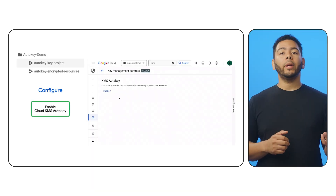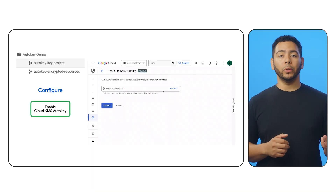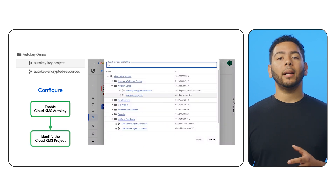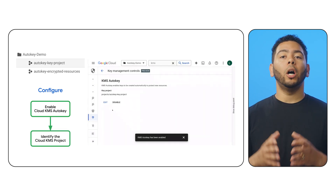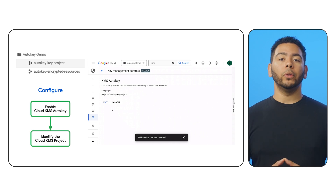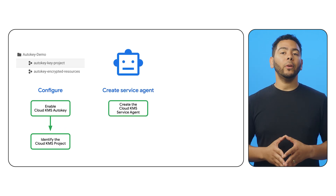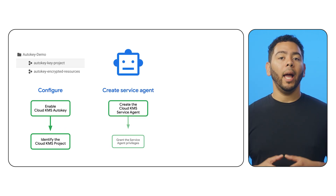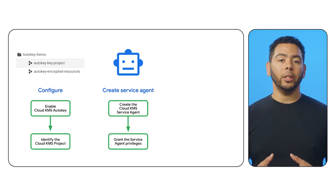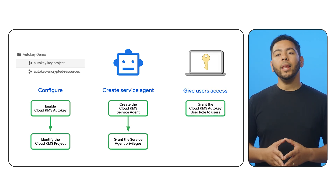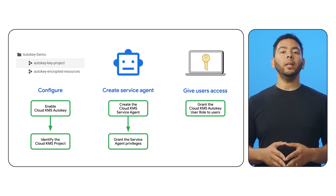Before you can use AutoKey, your security administrator must complete the following one-time setup tasks. Enable Cloud KMS AutoKey on a resource folder and identify the Cloud KMS project that will contain the keys that AutoKey creates on your behalf for that folder. Then create the Cloud KMS service agent and grant the service agent key creation and assignment privileges. And finally, grant the AutoKey user role to AutoKey users.